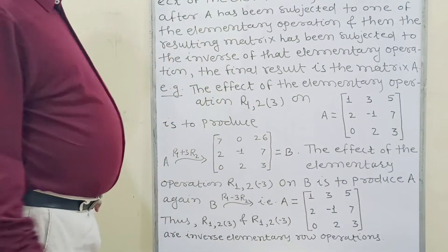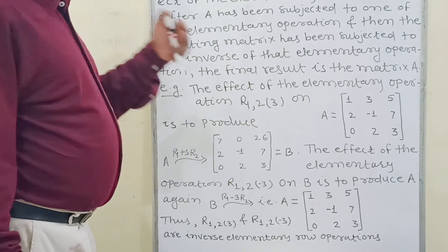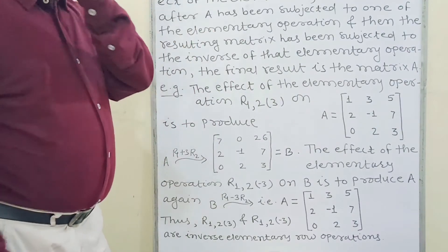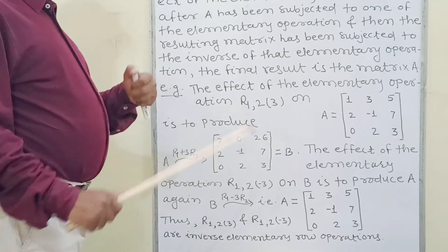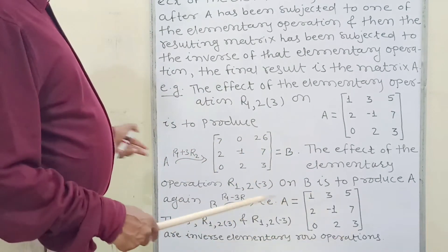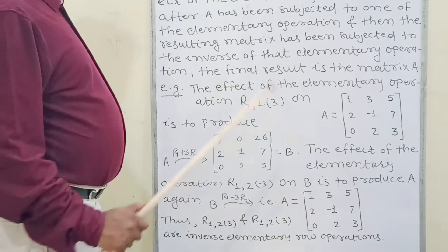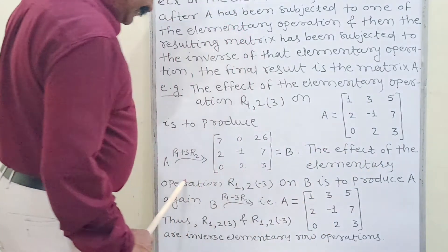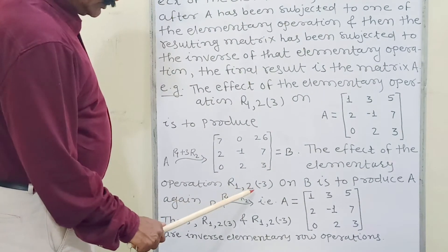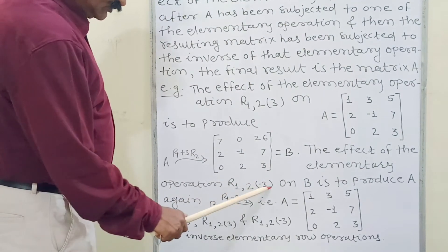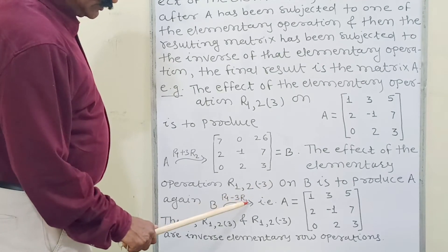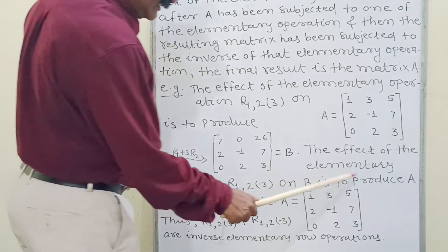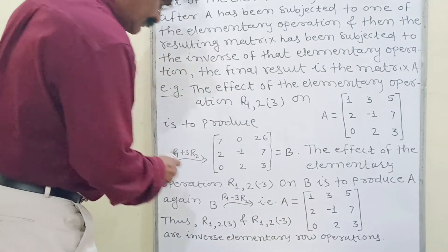Now the inverse operation: we multiplied R2 by 3 and added to R1. Now instead multiply R2 by minus 3 and add to R1 — that gives the original matrix A. This inverse elementary operation is R1 minus 3R2, applied on B to produce A again.